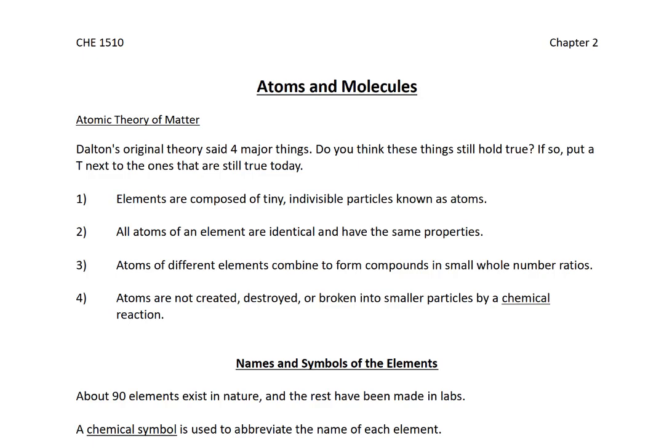First, elements are composed of tiny indivisible particles known as atoms. If you know anything about nuclear chemistry then you know that these particles are now divisible. We can collide things together and have just a proton come off or generate just a beam of electrons. This is part of nuclear chemistry, so number one is no longer true because we can divide atoms.